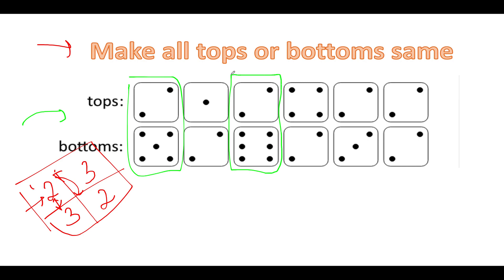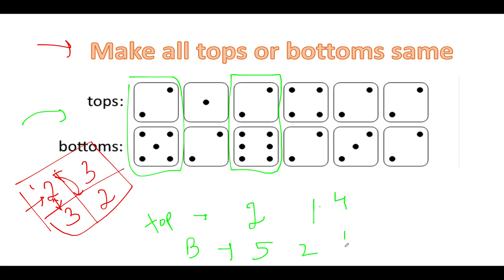Now comes the question: how are we going to solve this? The naive approach that comes to everybody's mind is to look out for what all unique replacements are possible. Let's check what unique values exist in the top array: we have 2, 1, and 4. In the bottom array, we have 5, 2, 6, and 3 as the unique values.